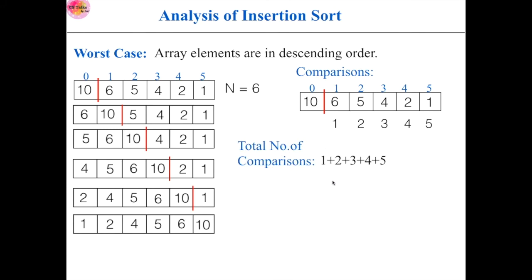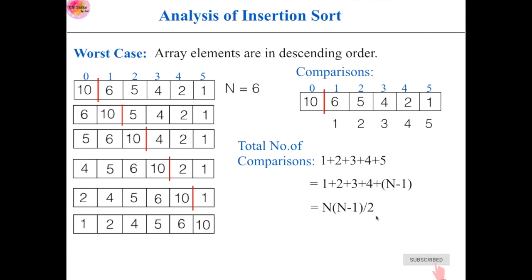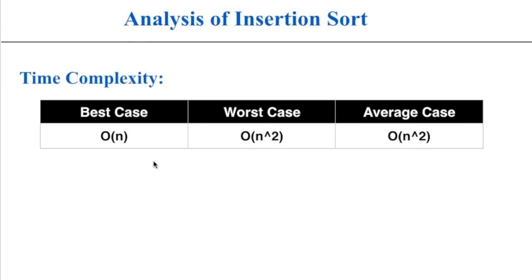Now this is the total number of comparisons and we have to express this in terms of n. Here n is 6, so we can rewrite 5 as n-1. This sequence is the sum of the first n-1 numbers, so it equals n(n-1)/2. In big O notation, we ignore the constant term, so it becomes n(n-1), and when you solve this you get n² - n. From this, you consider only the higher order term, so the worst case is O(n²). So the best case time complexity is O(n) and the worst and average time complexity is O(n²).